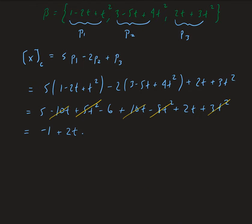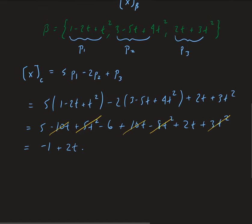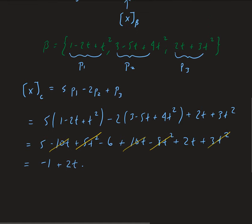Basically, if you look at this polynomial expression, that is just a different way of writing minus 1 plus 2t in terms of the polynomials in our basis beta.